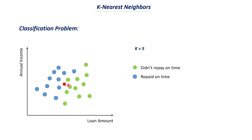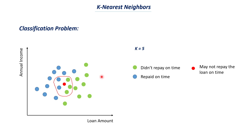We look at the five data points closest to the red point. If we draw a boundary, we can see three data points belonging to the green class and two belonging to the blue class. Since green represents people who don't repay and blue represents people who do repay, the model checks which class has the majority among those neighbors. Green has three and blue has two, so the model predicts this person may not repay the loan on time. This is how K-nearest neighbor works for classification — it finds K nearest neighbors and the majority class wins.